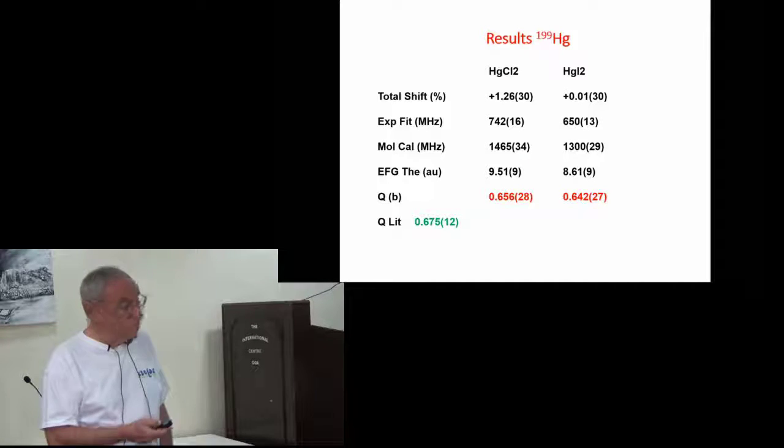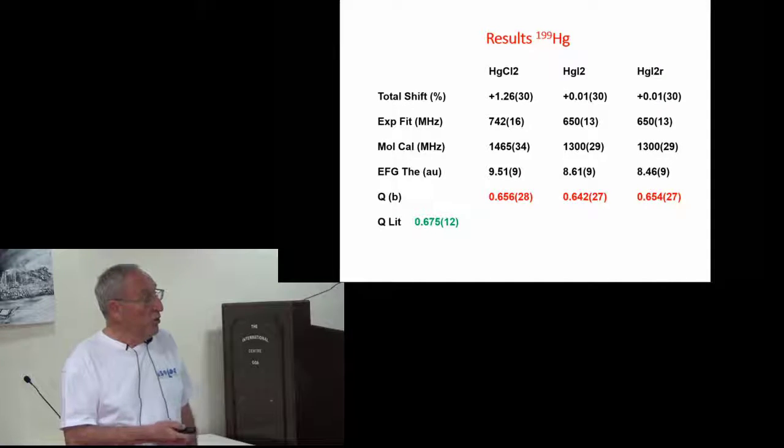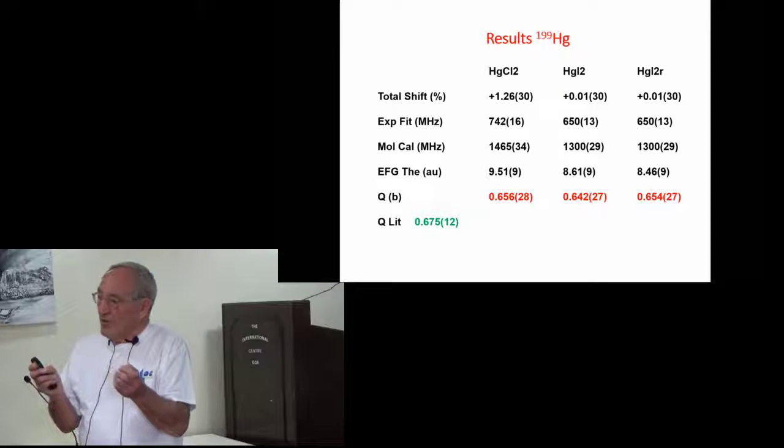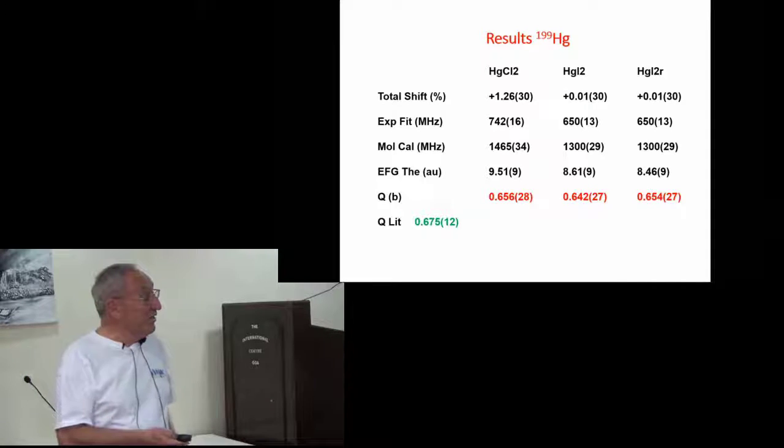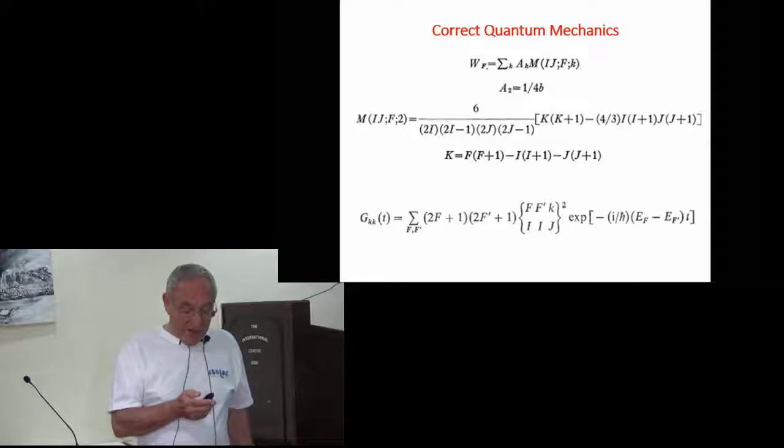If you do it a little bit better, and that is use a better distance between mercury and iodine - the one that they had actually used and better known nowadays - you even improve the agreement between our two numbers. This theory has to be corrected because of the radius. The electric field gradient in that molecule is dependent on the internuclear distance. So that was the test, and then we had to do the quantum mechanics correctly.